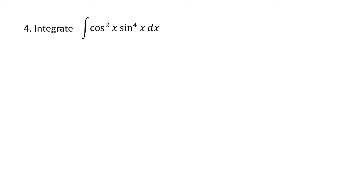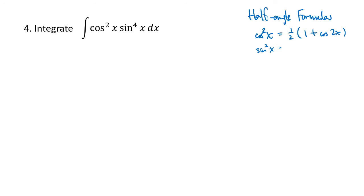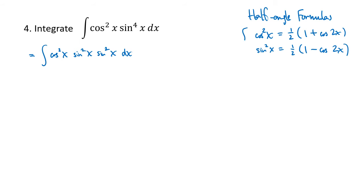What do we do when both of the powers are even? Here we use the half-angle formulas. The half-angle formula for cosine says cosine squared of x is one-half times one plus cosine of two x. Sine squared of x is one-half times one minus cosine of two x. Because all of our powers are even, we break everything up in terms of pairs: cosine squared, sine squared, and another sine squared. Each of those gets replaced using these half-angle formulas, giving us one-half times one plus cosine two x, times one-half times one minus cosine two x, times one-half times one minus cosine two x, dx.